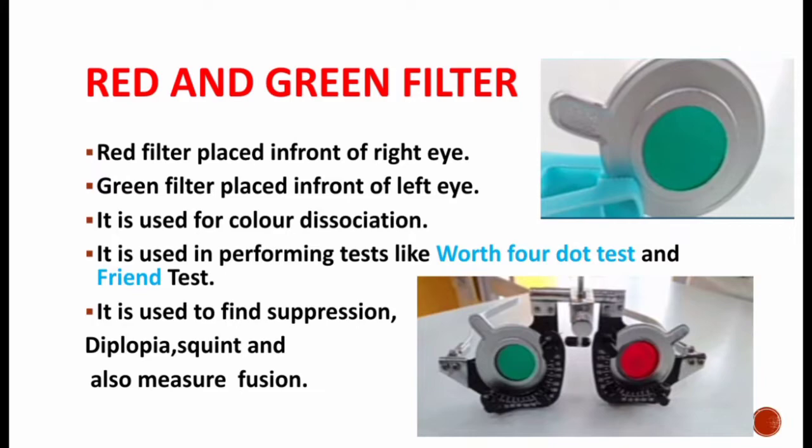Next, red and green filter. The image displayed in this slide is the red and green filter. Red filter is placed in front of the right eye and green filter is placed in front of the left eye. Red filter allows only red color to enter into our eye, and green filter allows only green color. It is used for color dissociation and also used in performing tests like the Worth dot test and Farnsworth test.